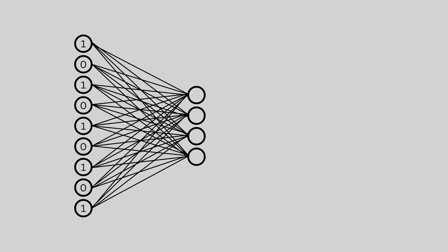Here's where weights come in. Each connection between an input node and a hidden node has a weight — just a number that indicates how important that pixel is to that hidden node's pattern. So in our example, if our hidden node is trying to detect a cross, then maybe center pixels will have more weight, and the side pixels might have less weight or even zero weight, because they don't help us detect the pattern of a cross.